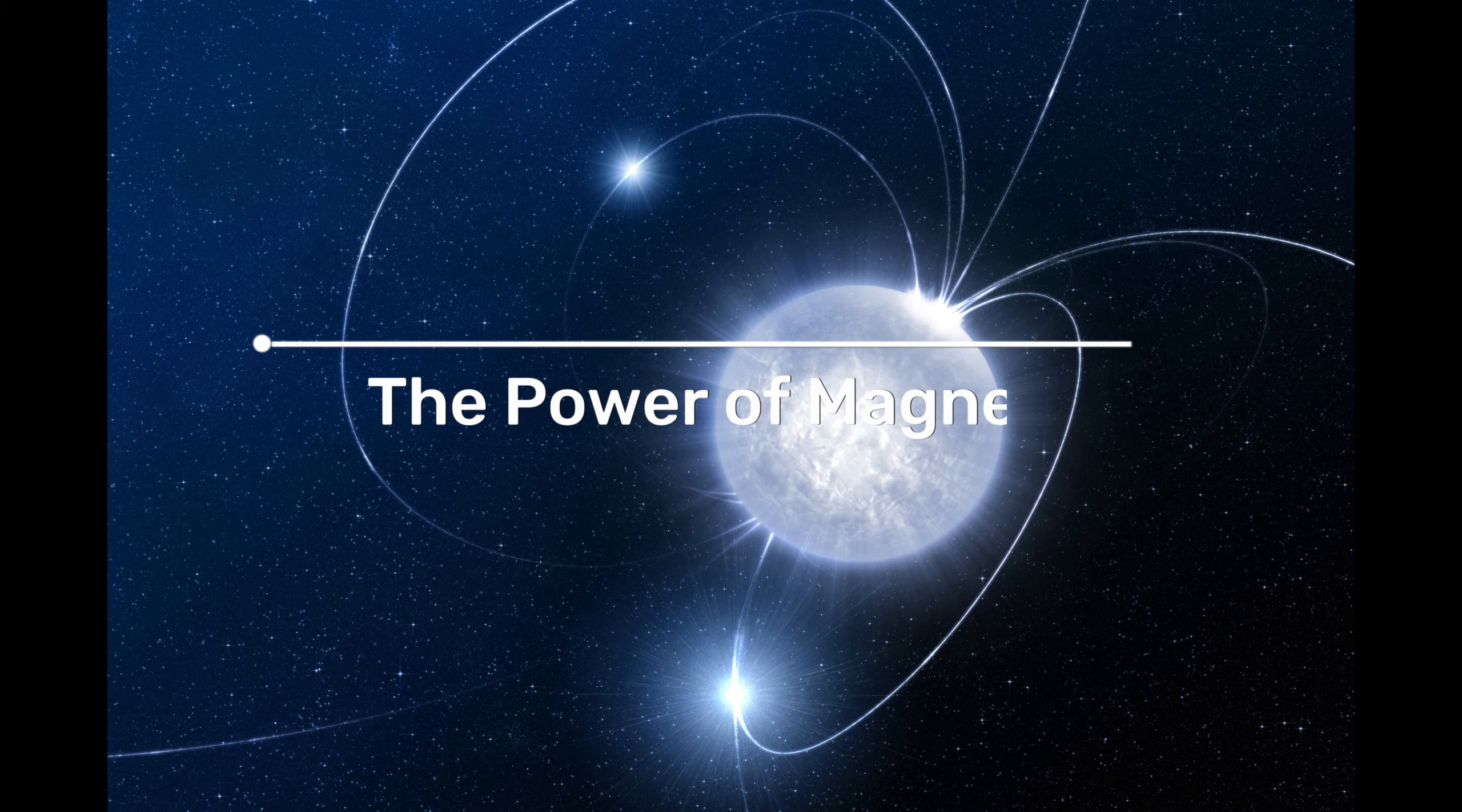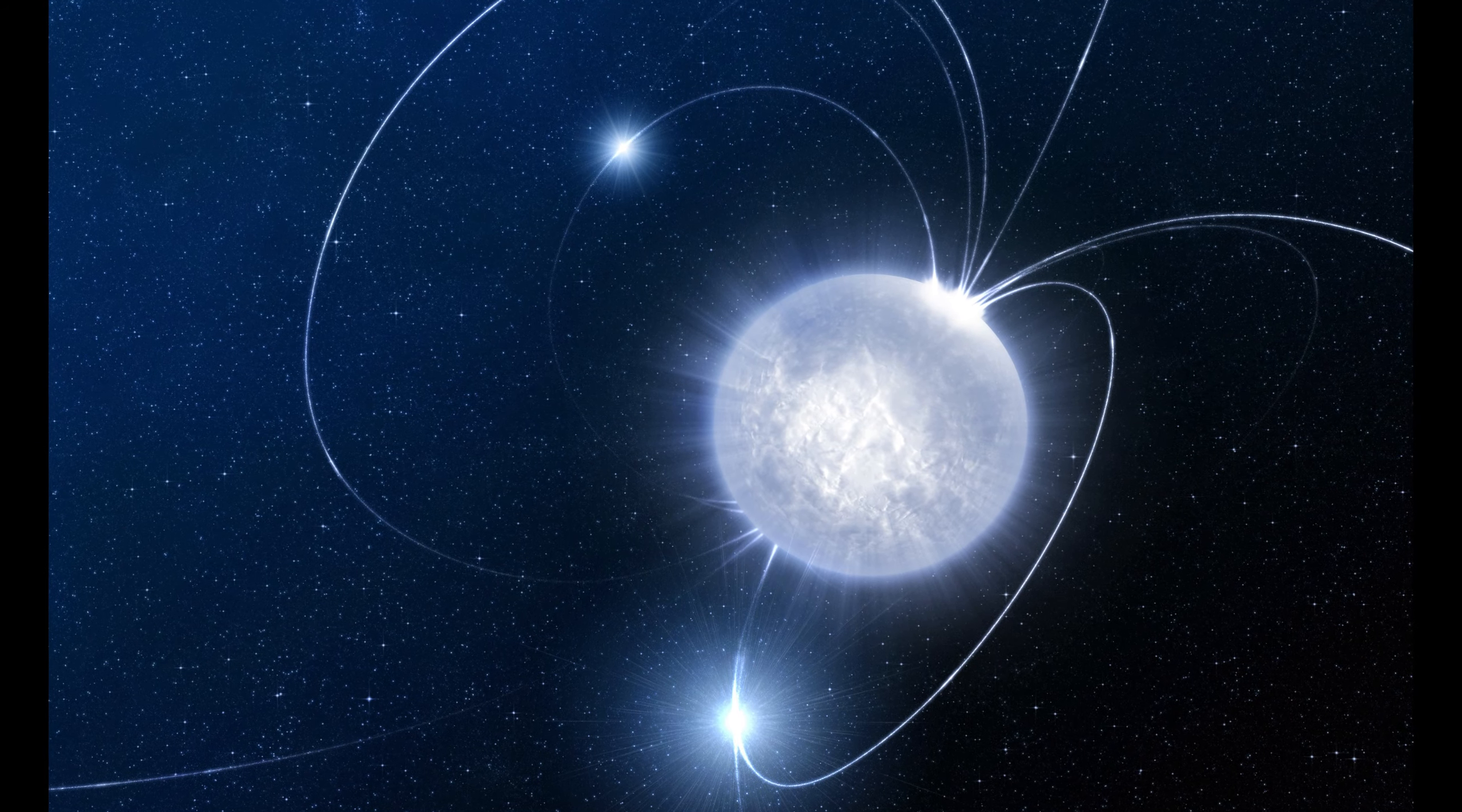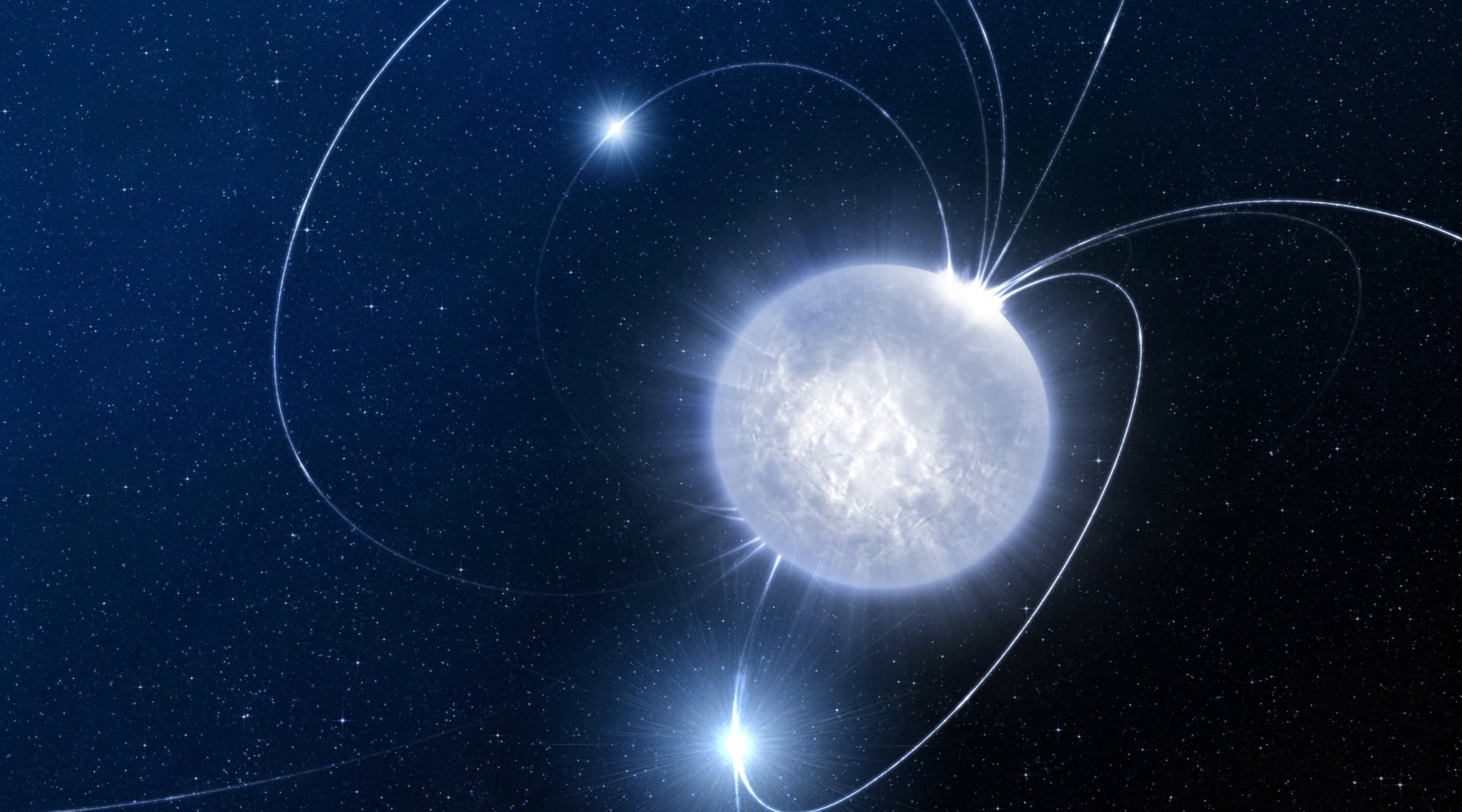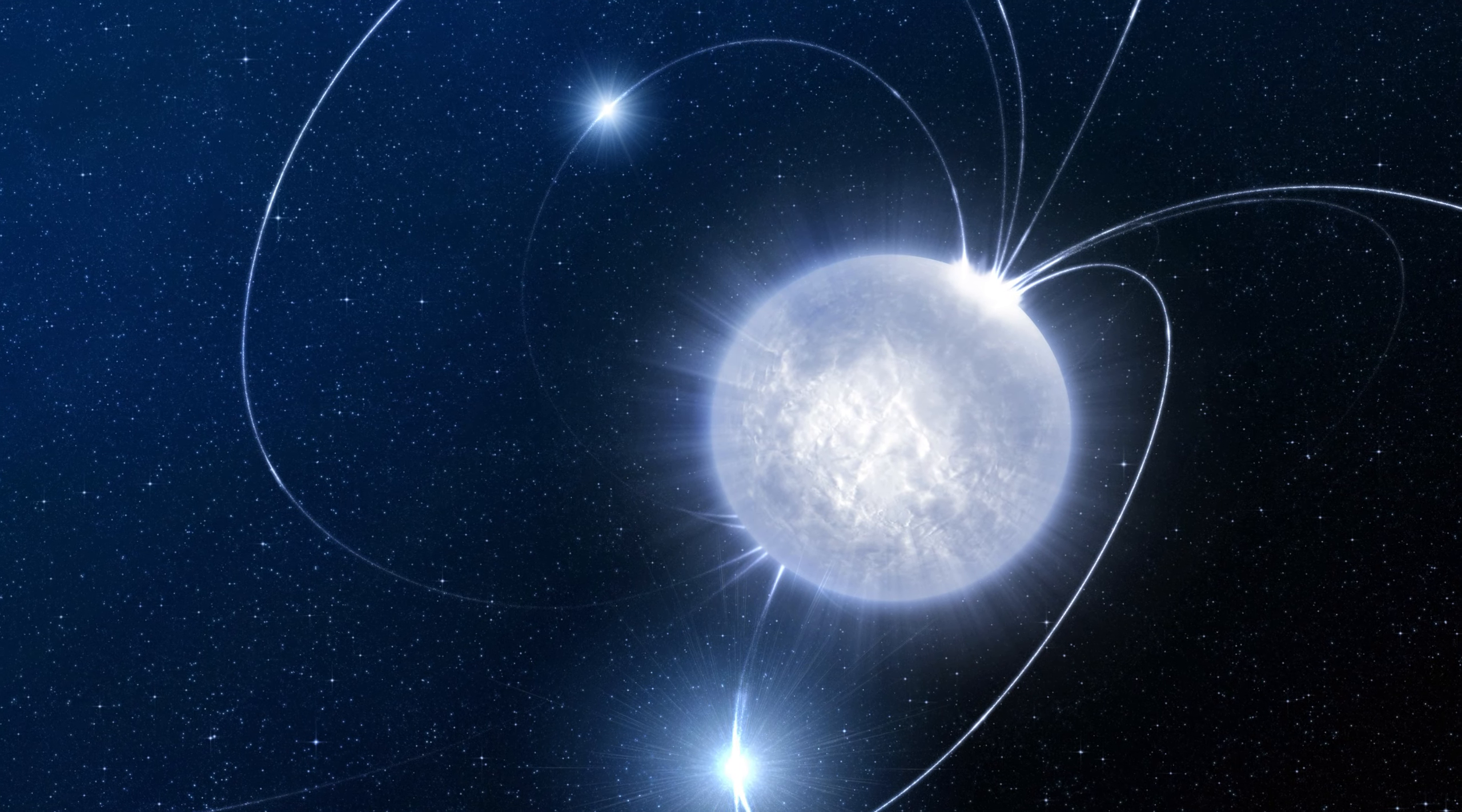The Power of Magnetars. The magnetic field of a magnetar is so strong that it can have significant effects on the physical properties of matter. For example, the magnetic field at the surface of a magnetar would be strong enough to strip information from the magnetic stripes of all credit cards on Earth from a distance halfway to the moon.